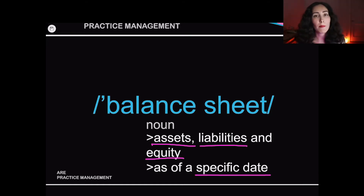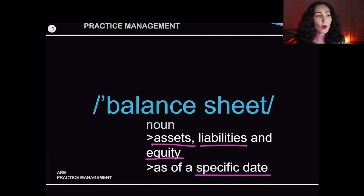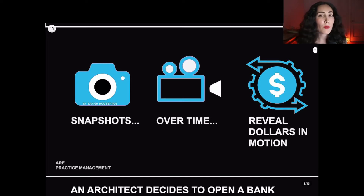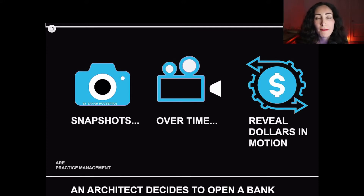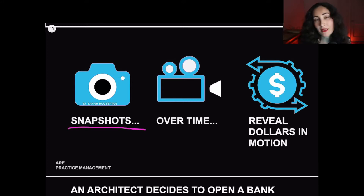The key thing to remember is that the balance sheet is as of a specific date — a single point in time. We can have a balance sheet for today and also for tomorrow, but you don't have a balance sheet for January 1st through December 31st. That's not a balance sheet. A balance sheet is a single point in time. The balance sheet is actually your snapshot.